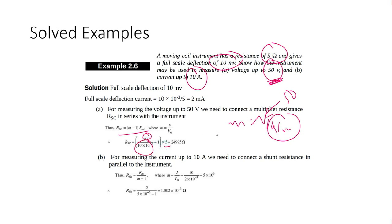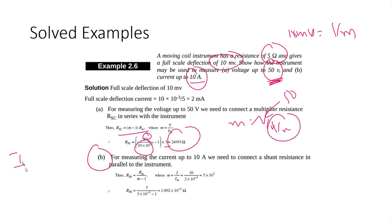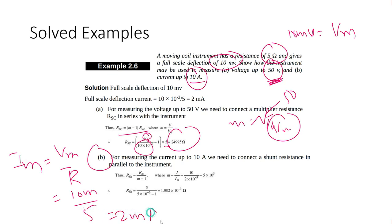Rsc is calculated as (50 divided by 10×10⁻³ minus 1) multiplied by 5 ohms. For the ammeter conversion, we first calculate Im: Im = Vm divided by R = 10 milli divided by 5, giving Im = 2 milliampere.